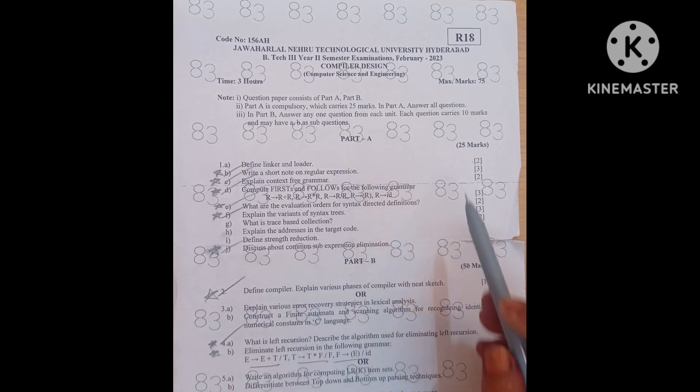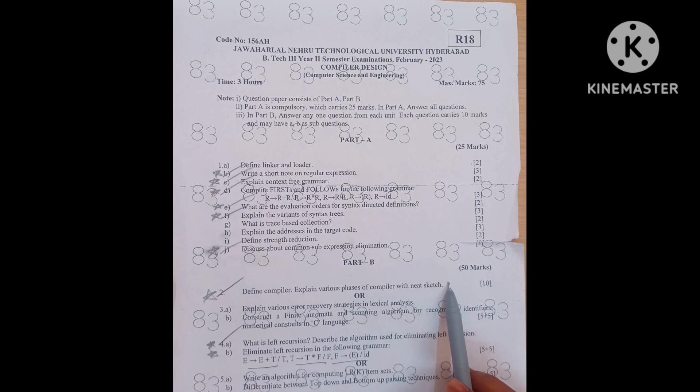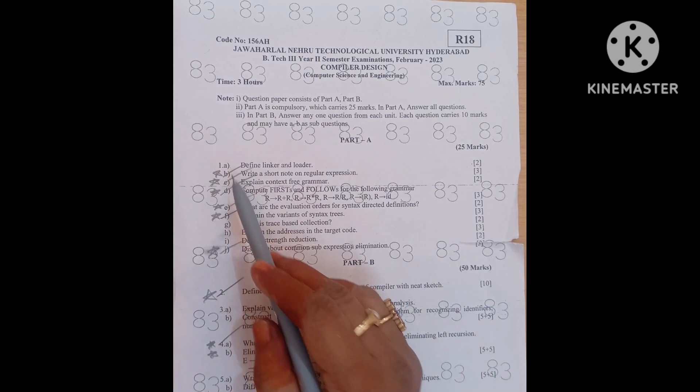Here also same thing, Part A and Part B. Part A consists of 25 marks. Part B is for 50 marks questions. First question A to J.